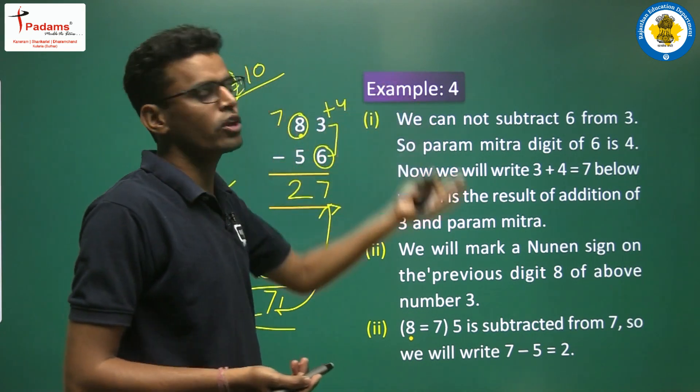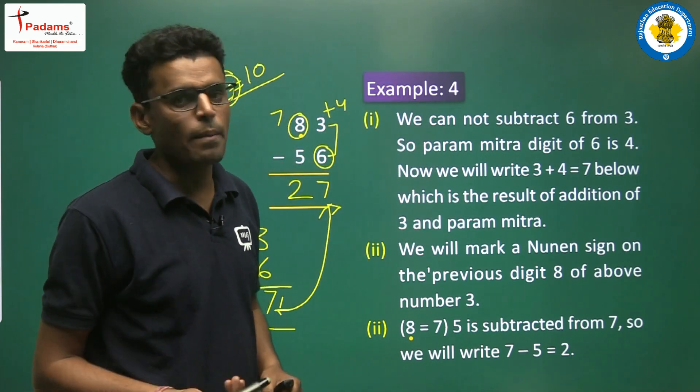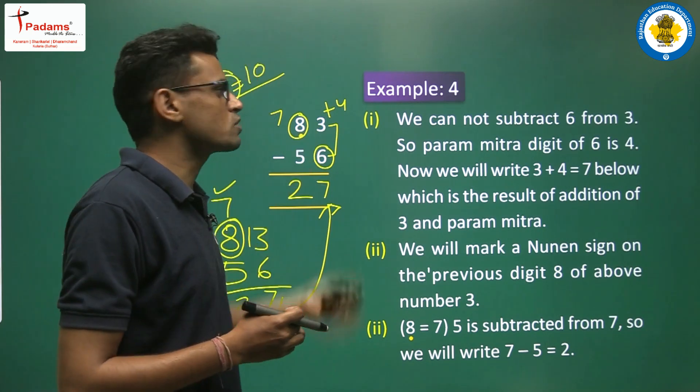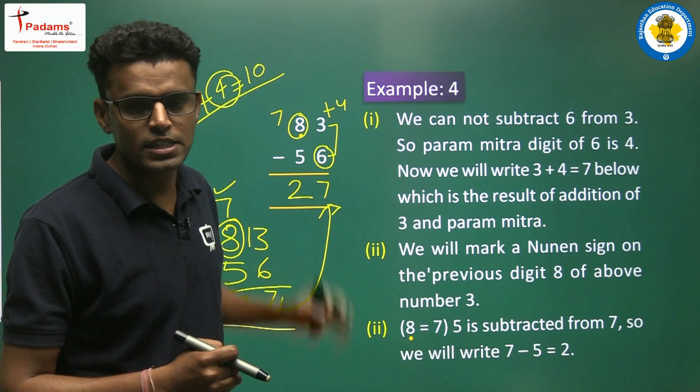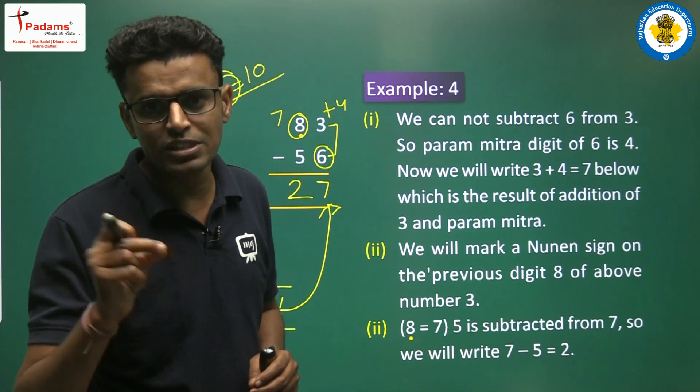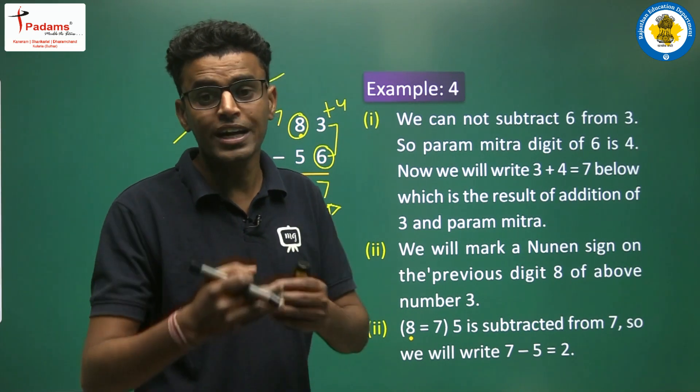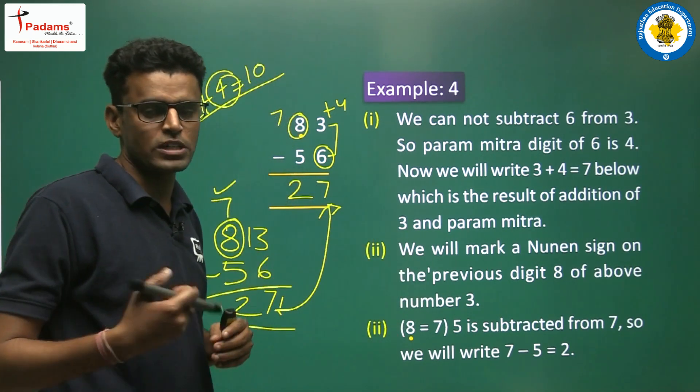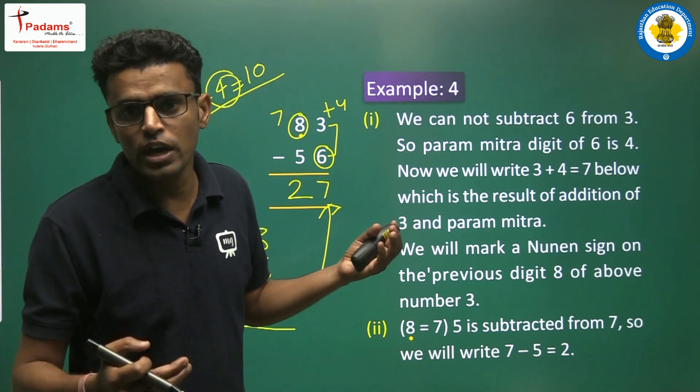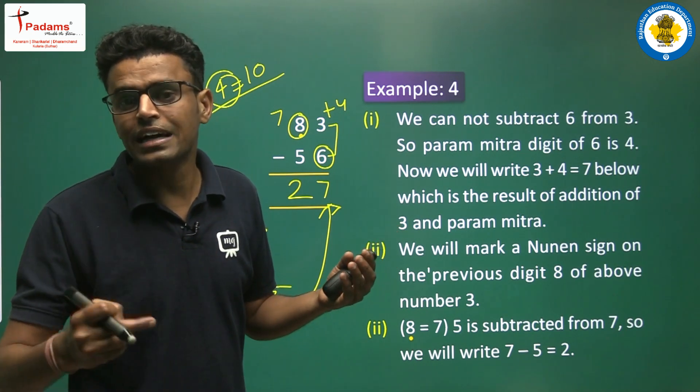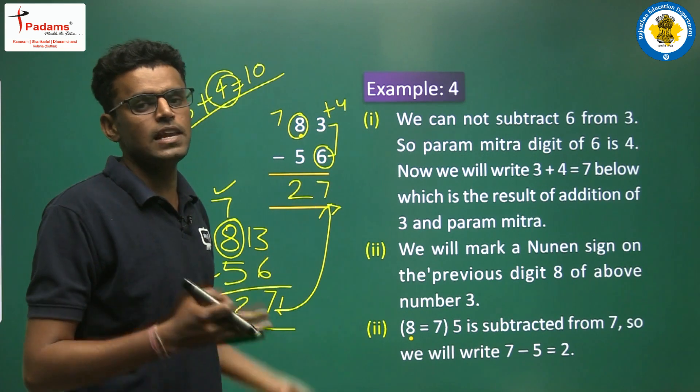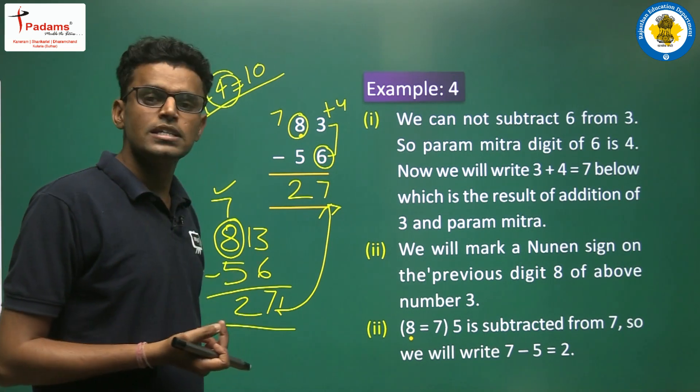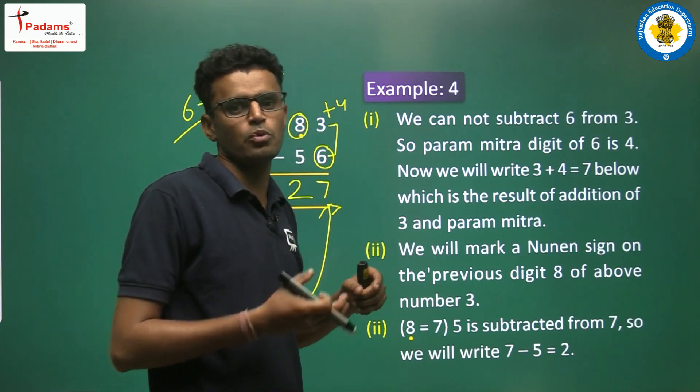Here we remind: first we check if the smaller unit can be subtracted. If not, we find the paramitra digit and write a dot symbol on the downside of the tens place. When we put the first value as 8, it converts to 7 because we do the predecessor number and union number. So we have 7 and easily subtract 5, so our result is 2 and 7 units. Our answer is 27. This is how we use the procedure.